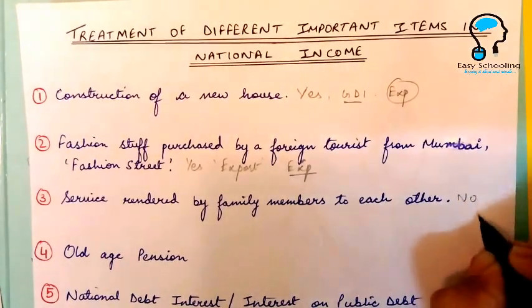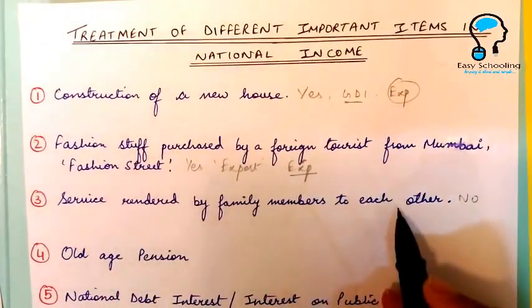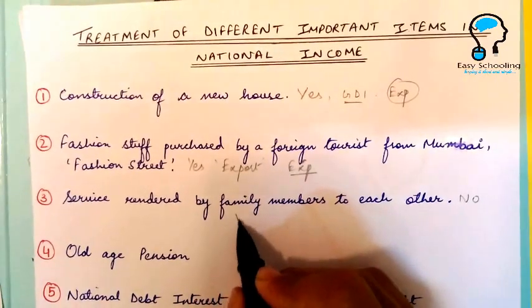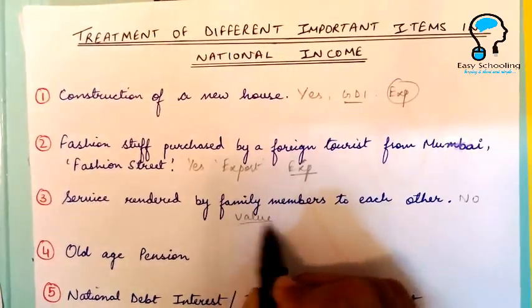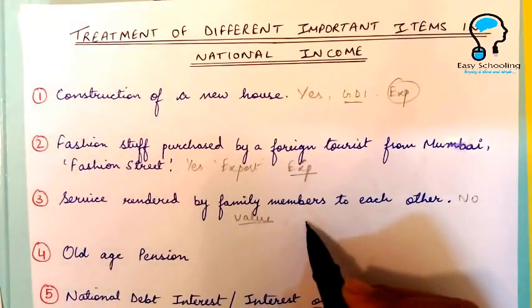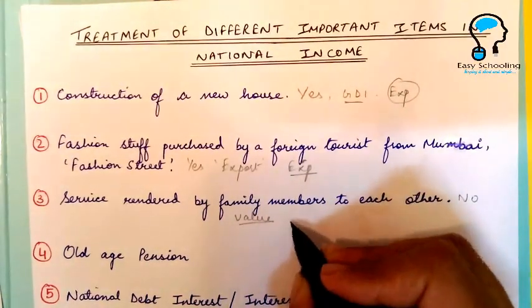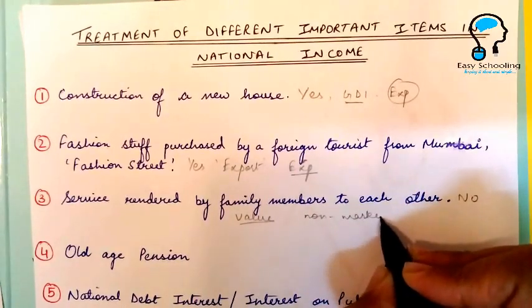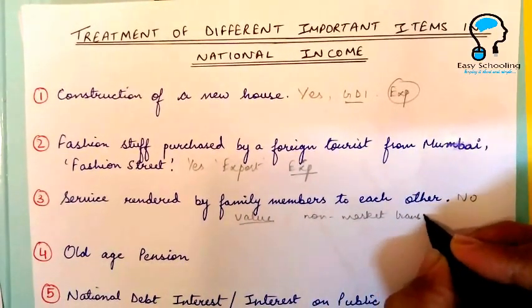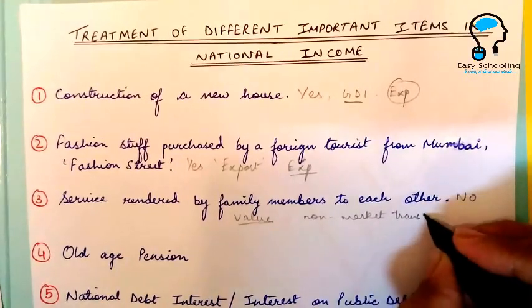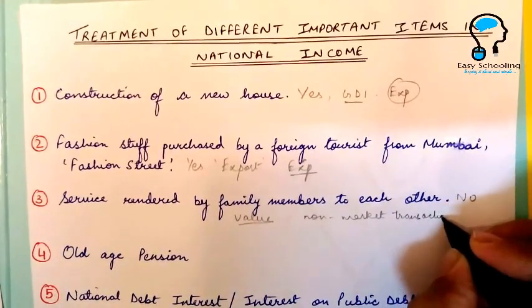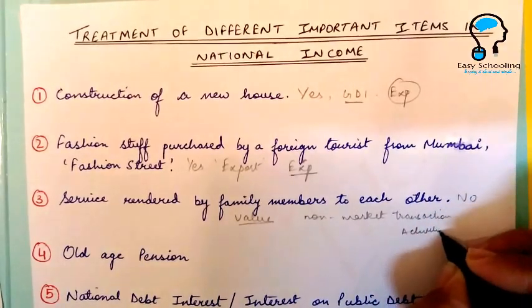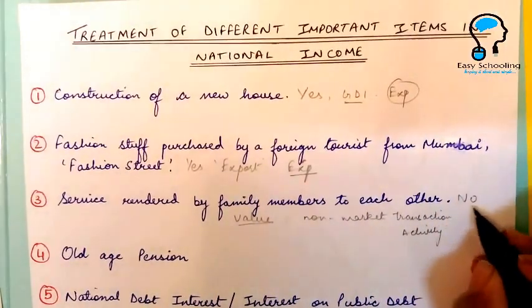Service rendered by family members to each other — no, this will not be included in national income because it is difficult to estimate the value of such services, and it is also a non-market transaction or non-market activity. So it will not be included in the calculation of national income.